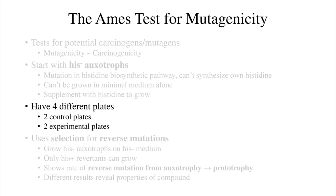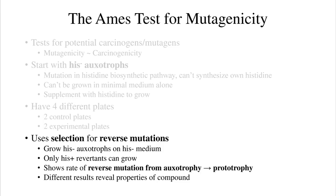The setup of the AIMS test has four different plates — two control plates and two experimental plates. It's important to realize that the AIMS test uses a selection to select for reverse mutants. The hist-minus auxotrophs are plated on hist-minus medium, so the only bacteria that can grow are the hist-plus reverse mutants, or revertants. This is a selection for the hist-plus revertants — the bacteria that started as hist-minus auxotrophs and became prototrophs via reverse mutation.